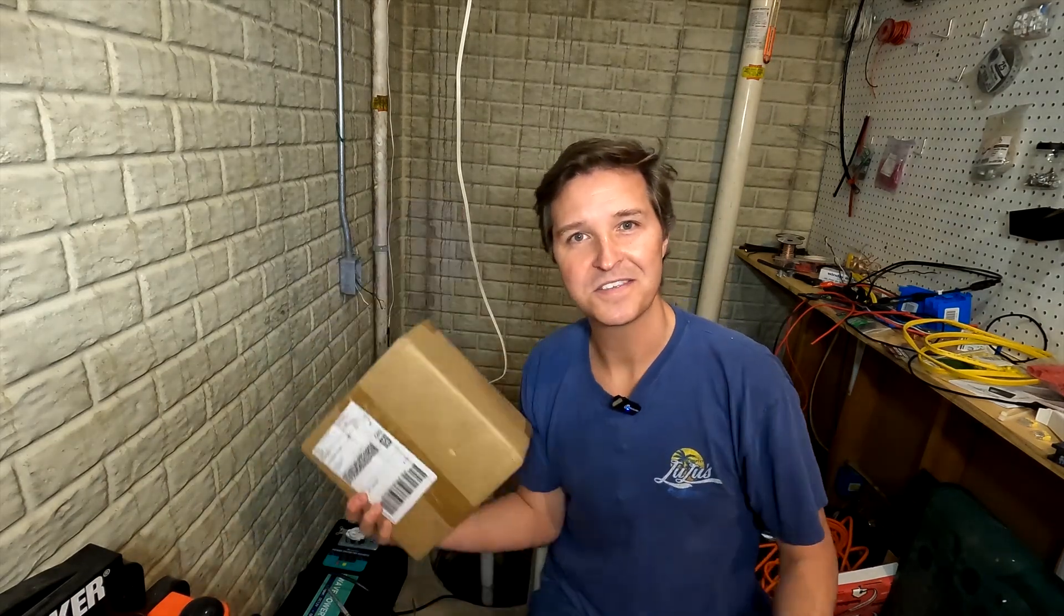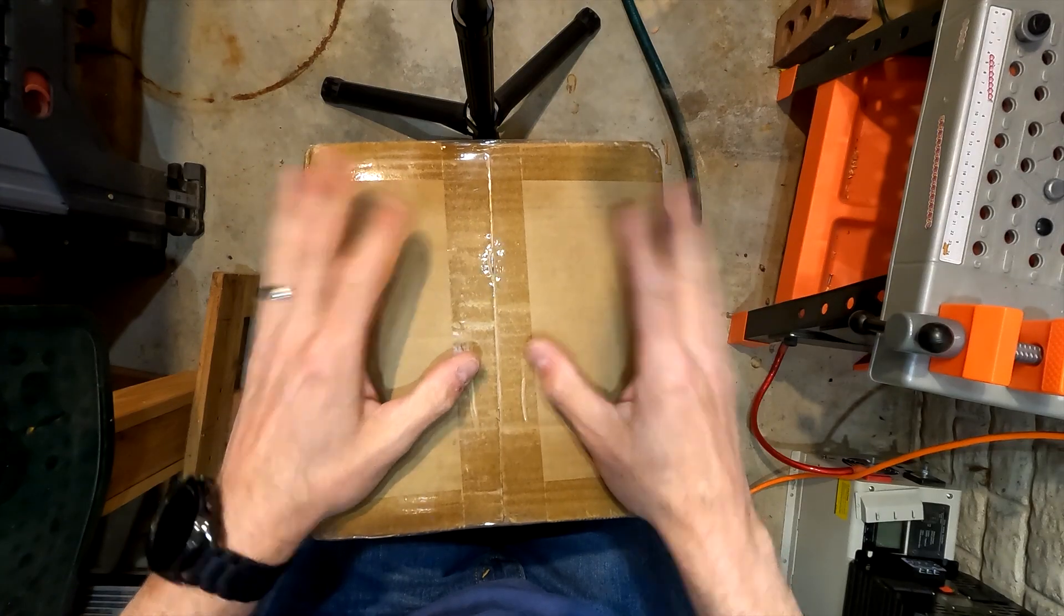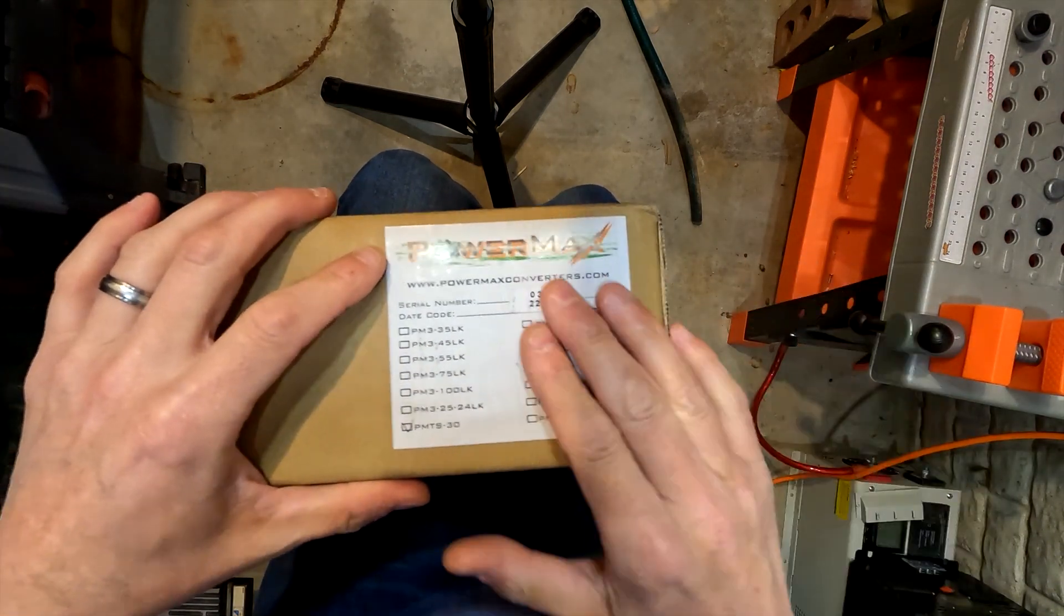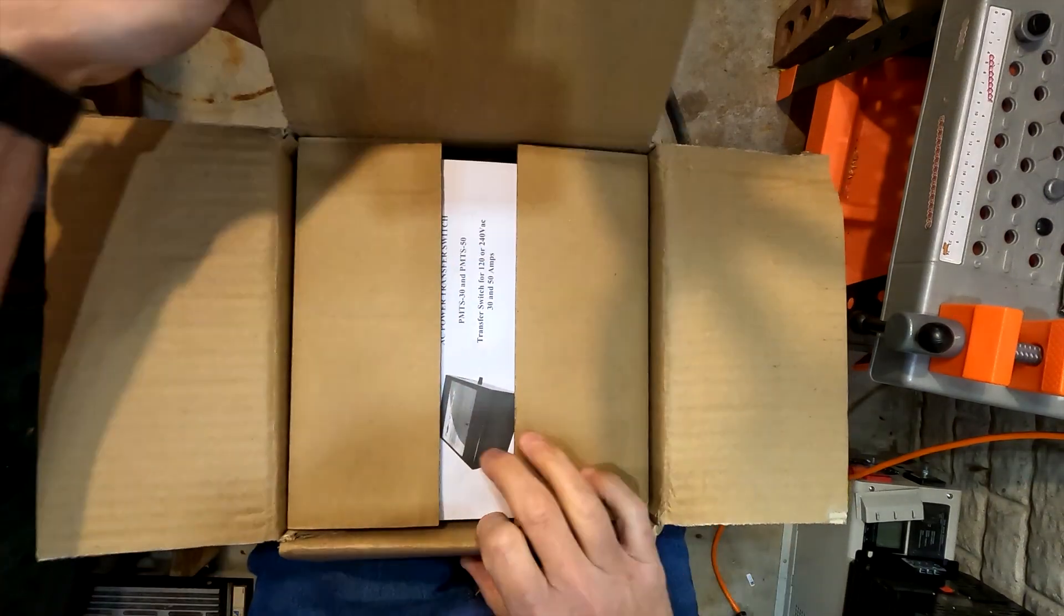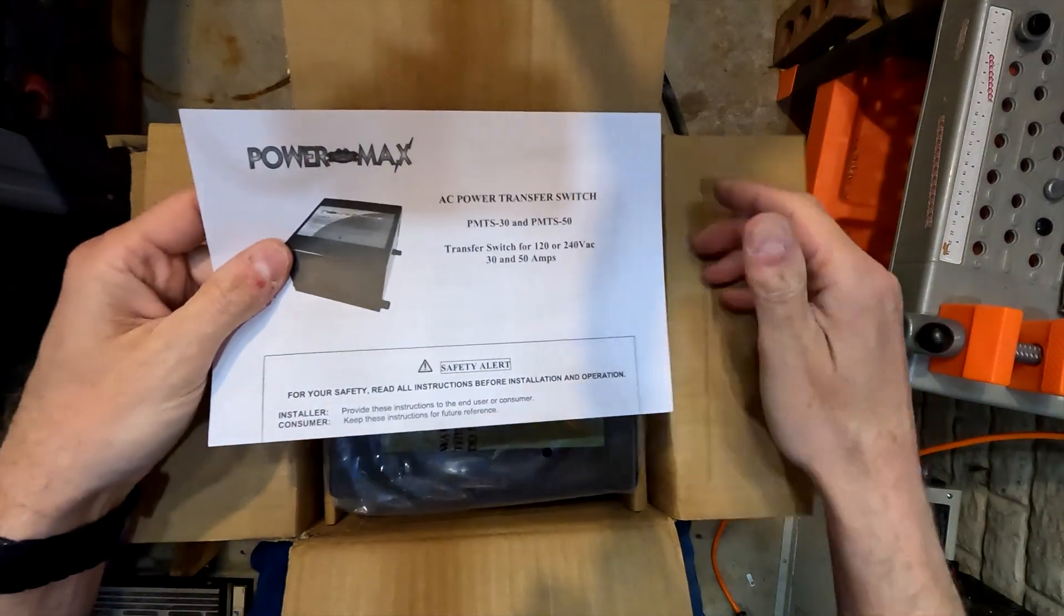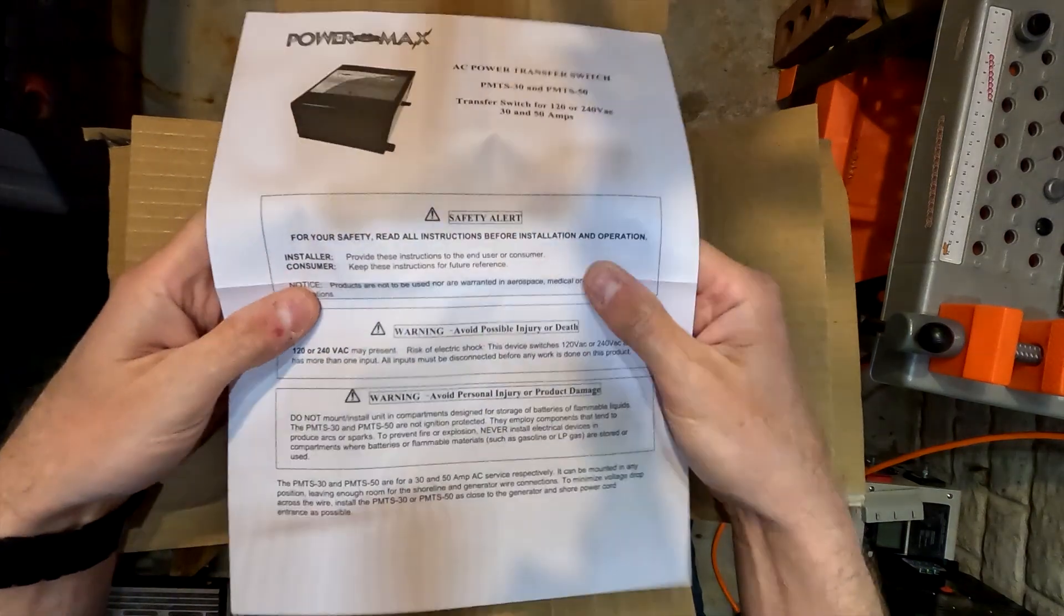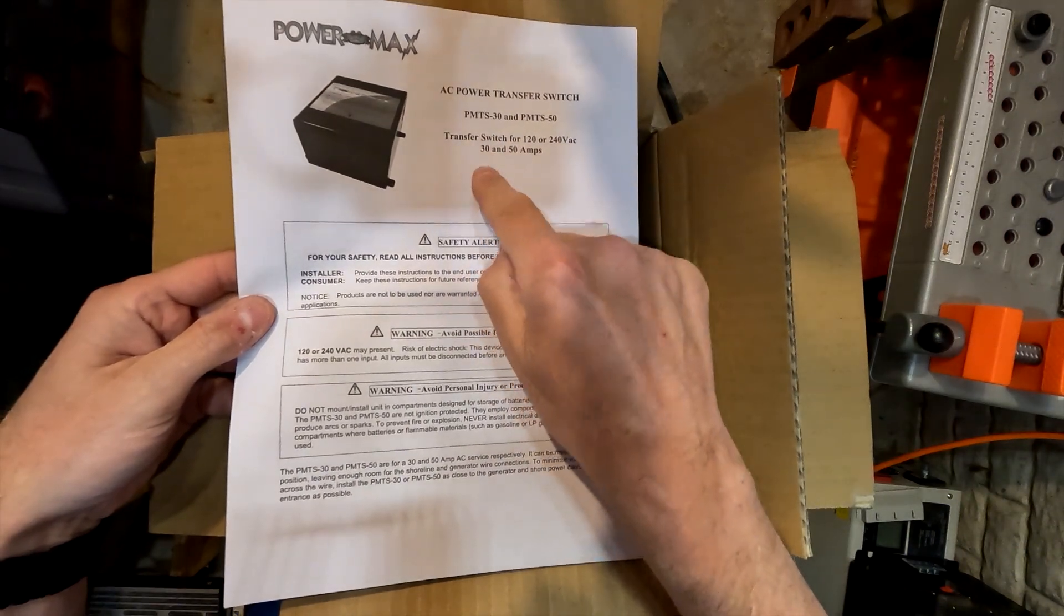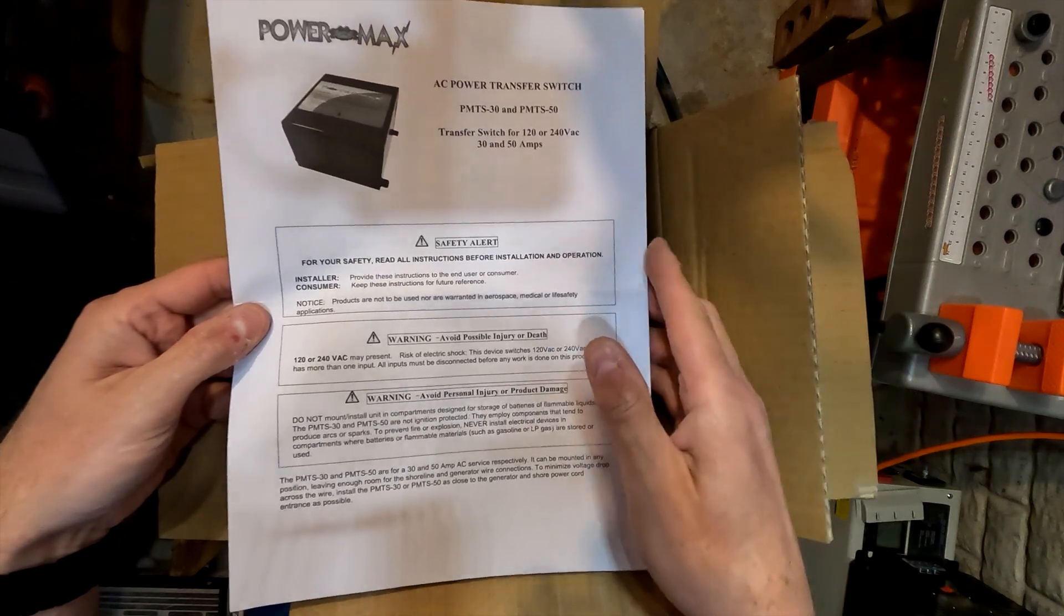It's in this box right here, so let's go ahead and open it up. What we have is the Powermax 30 amp automatic transfer switch. First, we have some sort of instruction guide with a lot of safety alerts. I bought the PMTS-30 because I just needed a 30 amp transfer switch for one plug.